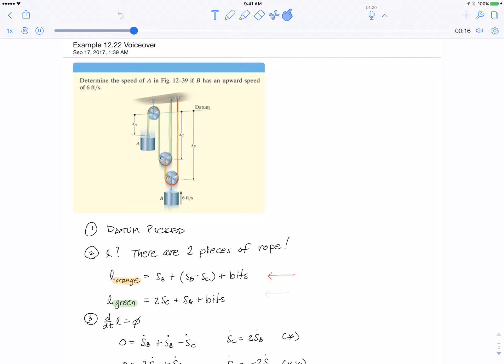Given relative to the datum in terms of SB and SC, I've done the same thing with the green rope, which is in terms of SC and SA. You take the derivative. The length of the rope is constant.